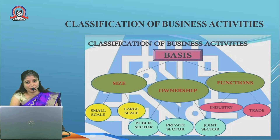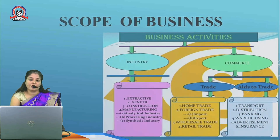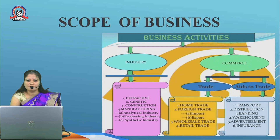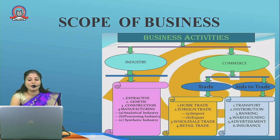On the basis of function, business can be classified into two parts: industry and trade. The scope of business consists of two parts: industries and commerce. Industry includes various types such as extractive industry, genetic industry, manufacturing industry, and construction industries. Commerce is a wide area which consists of trade and aid to trade.